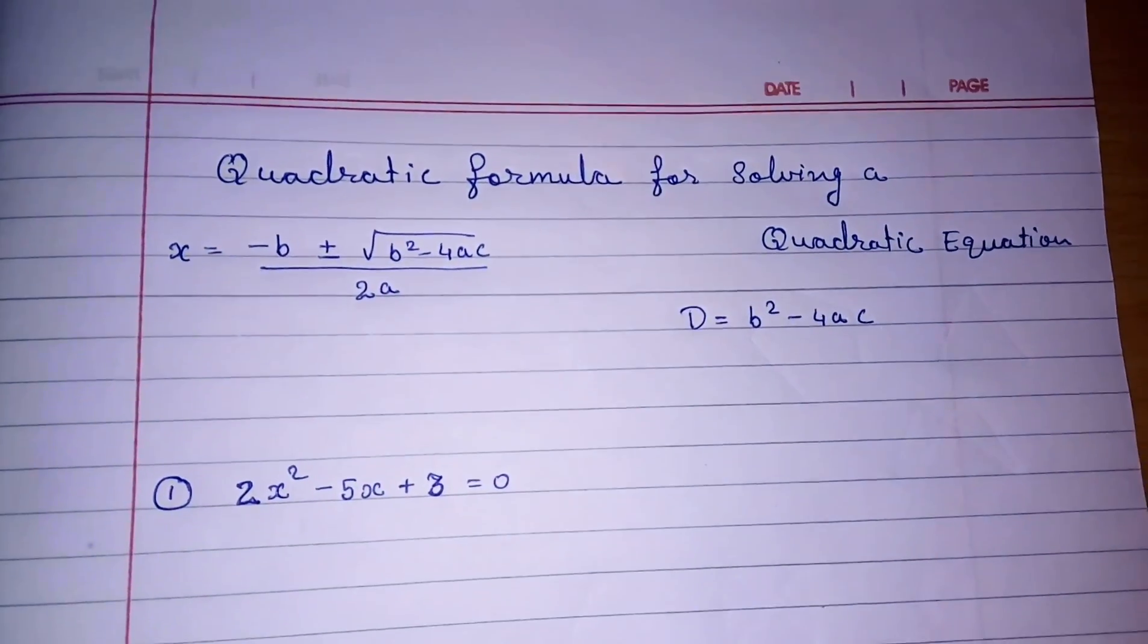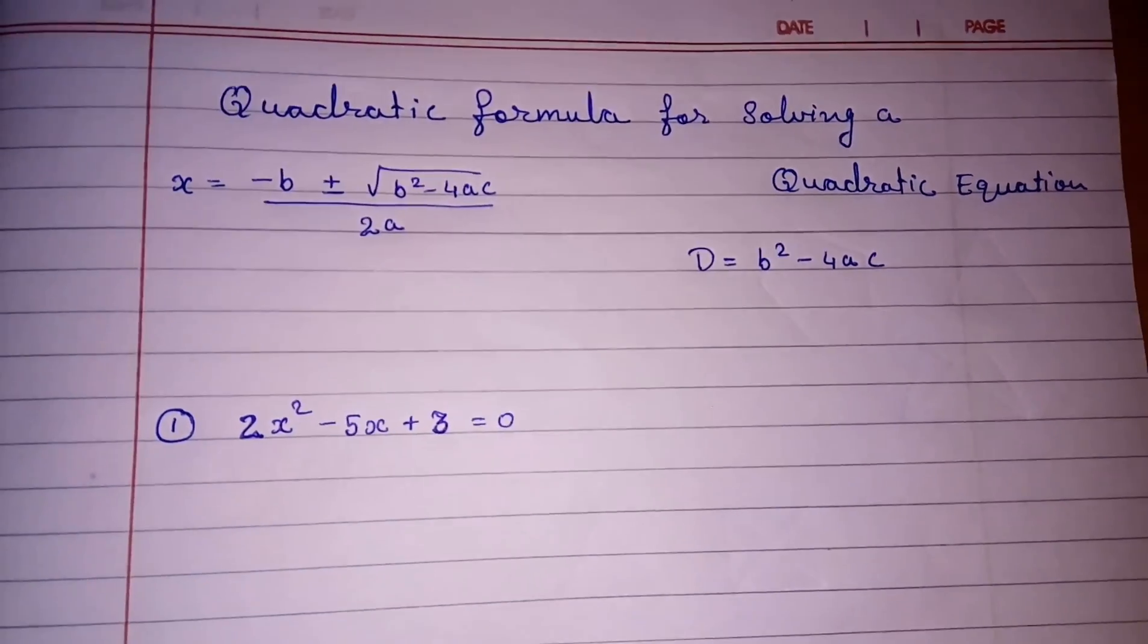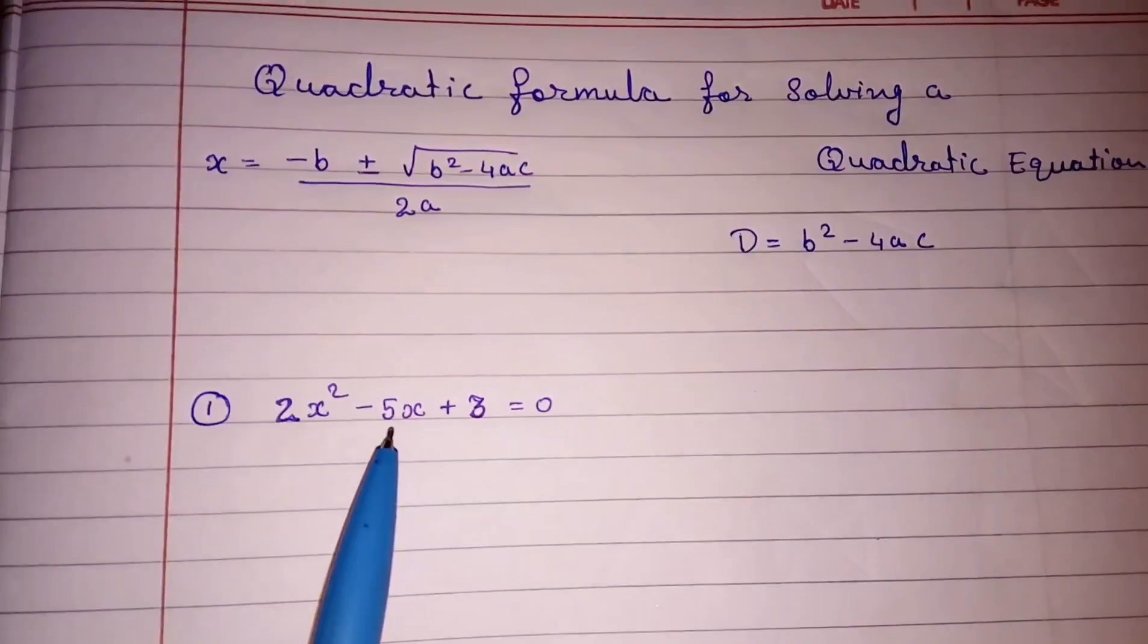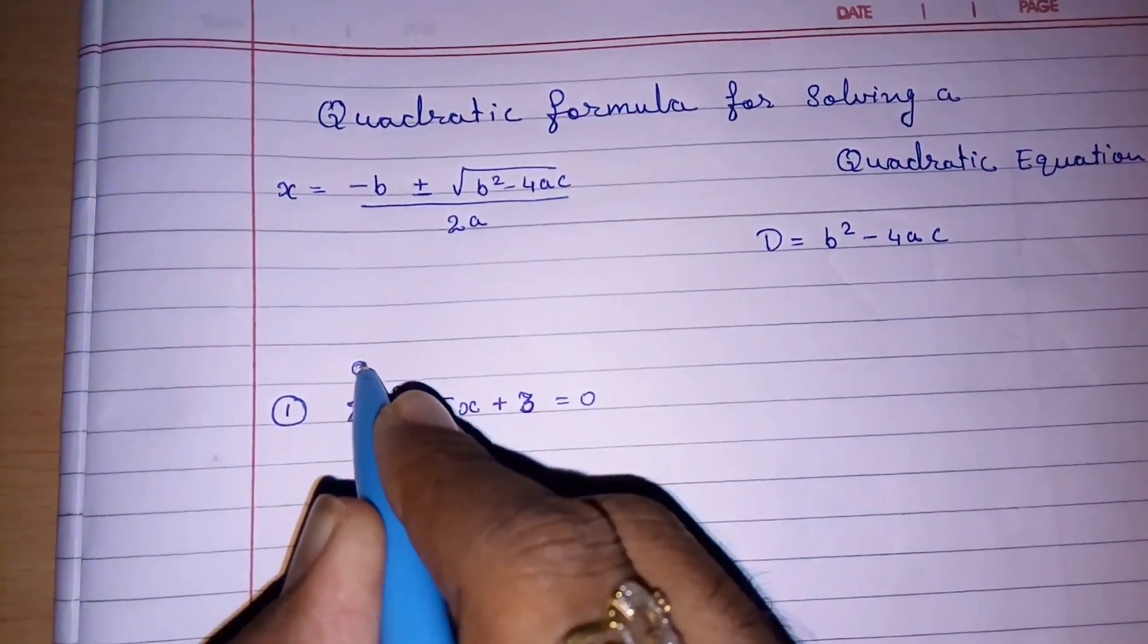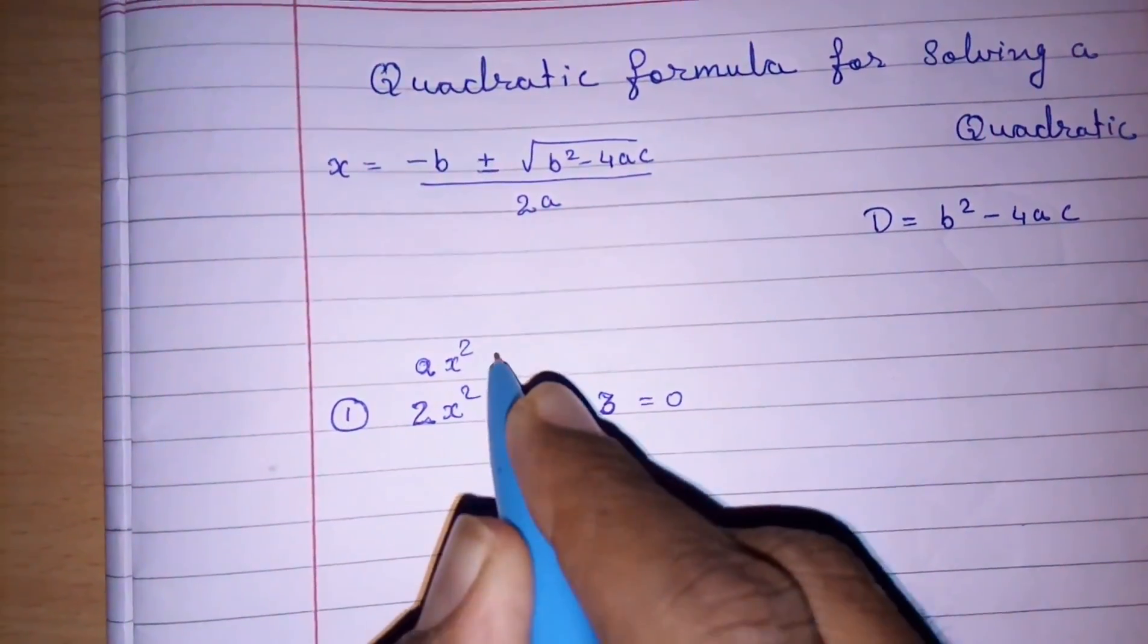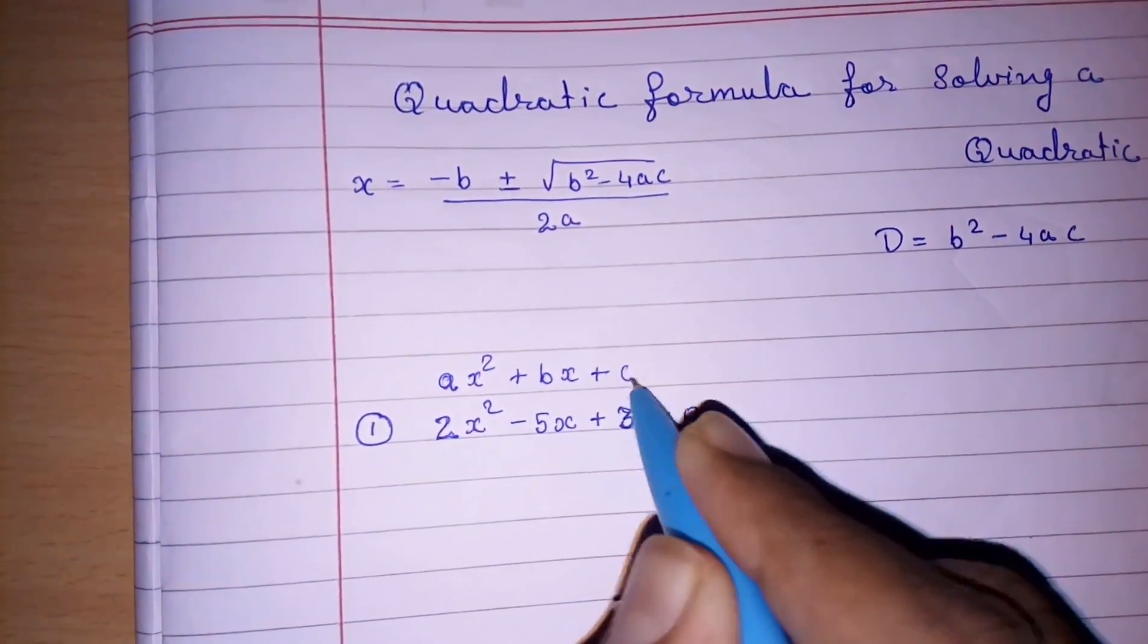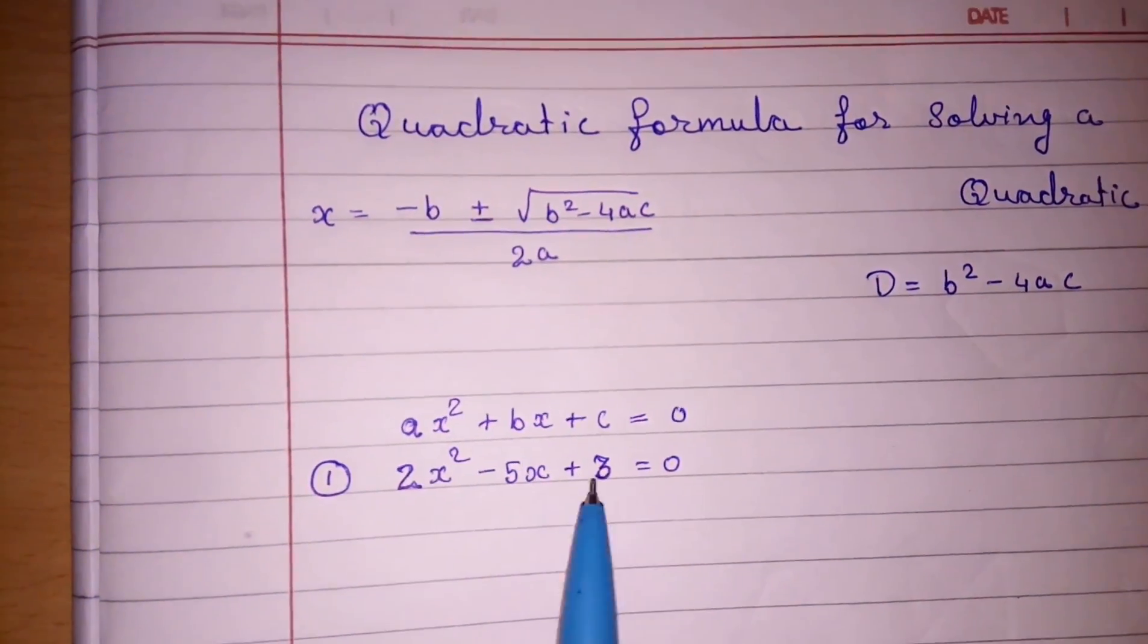First we should know the standard form of a quadratic equation. Here I am going to write the standard form. The equation is given here. First of all we should know what is the standard form of any quadratic equation. It's ax² + bx + c = 0.